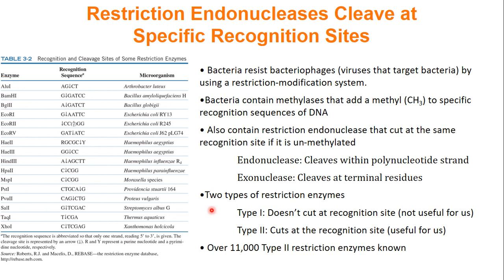We have different types of restriction enzymes. Type 1 will not cut at the recognition sequence but will cut somewhere else — for example, if the recognition sequence is GGATCC, Type 1 cuts maybe 100 base pairs away, which is not useful for biochemists. Biochemists use Type 2 restriction enzymes, which cut exactly at the recognition site. This is useful because when doing experiments, if we know the recognition sequence and use Type 2, we know a cut is happening there.